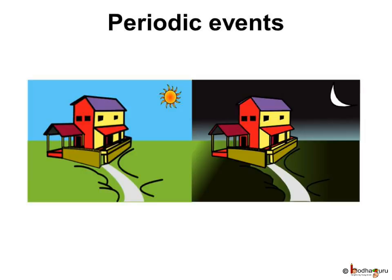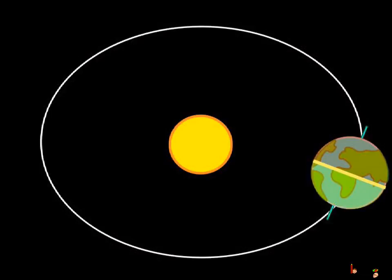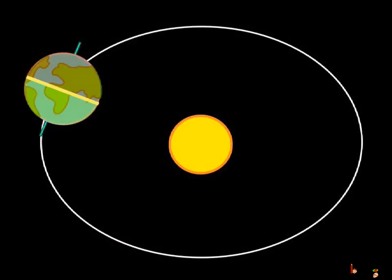One month was calculated from one new moon to another. A year was fixed as the time taken by the earth to complete one revolution of the sun.